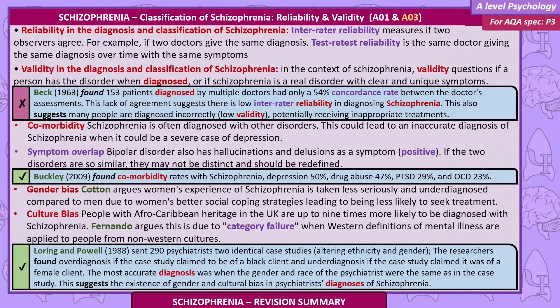Culture bias: people with Afro-Caribbean heritage in the UK are up to nine times more likely to be diagnosed with schizophrenia. Fernando argues this is due to category failure when Western definitions of mental illness are applied to people from non-Western cultures. Loring and Powell, 1988, sent 290 psychiatrists identical case studies altering ethnicity and gender. They found overdiagnosis when the case study was a black client and underdiagnosis when it was a female client. The most accurate diagnosis occurred when the gender and race of the psychiatrist matched the case study, suggesting the existence of gender and cultural bias.